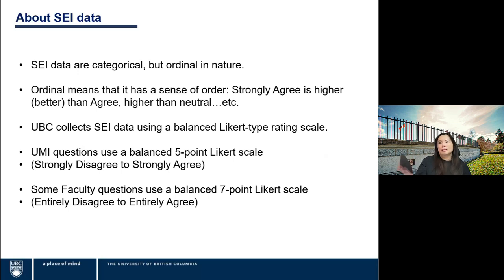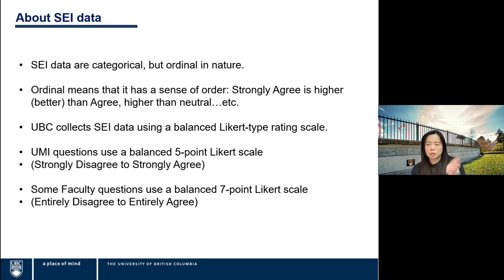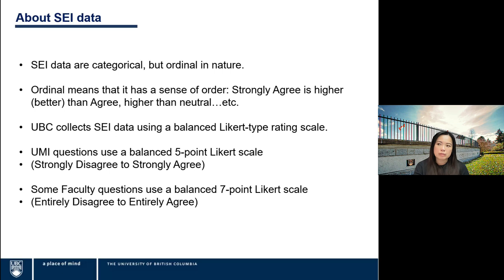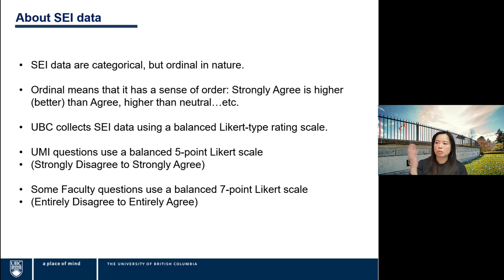A little about the SAI data itself. SAI data are categorical but ordinal in nature — ordinal means it has a sense of order, going from strongly agree down to strongly disagree. For all the questions we have, we use a balanced Likert rating scale. For the university module items, we use a five-point Likert scale, strongly disagree to strongly agree. Some faculty questions use a balanced seven-point Likert scale, going from entirely disagree to entirely agree, with neutral in the middle.